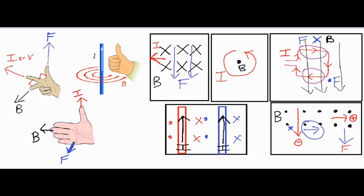Let's return to the two-wire problem to determine if the wires attract or repel. The red x's from the red wire are influencing the blue wire. Using the right palm rule: fingertips pointing into the screen, thumb pointing up with the current — the blue wire gets pushed to the left. For the red wire, the blue dots affect it: fingertips pointing out of the screen, thumb pointing up, palm faces right — the red wire gets pushed right. Both wires push inward toward each other, so they attract.